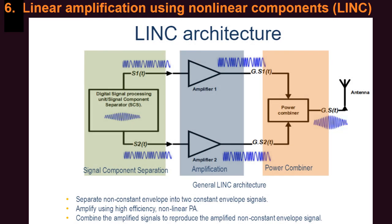The next topology is LINC — Linear Amplification Using Nonlinear Components. It is a more advanced form of EER. We have a signal component separator that splits the signal into two phase-modulated constant-envelope signals, and both are then amplified with switching-mode power amplifiers. There is then a combiner — usually a Chireix combiner — used to combine the signals and produce the amplified version. LINC is a very challenging topology and suffers from mismatch issues, but it offers very high bandwidth and is a highly explored topology. One can think of ET, EER, and LINC as one category of amplifiers in which some form of signal separation and recombination is performed.